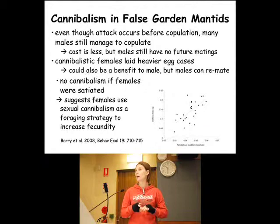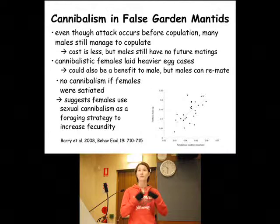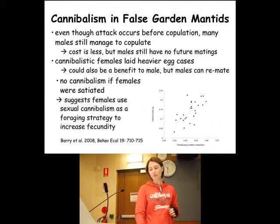I found that females will have about 40% more offspring just from one cannibalistic occurrence. So by eating one male, they have 40% more offspring — that's pretty huge, and it kind of tells us why they do this.